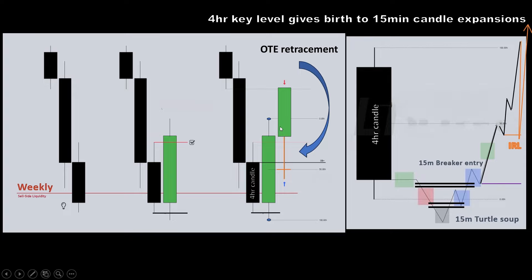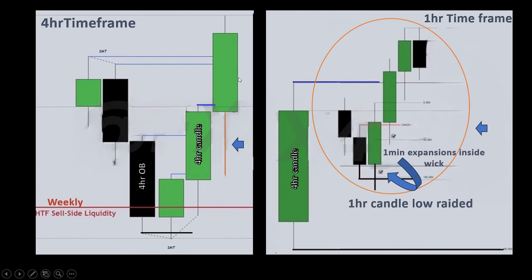After this new four-hour candle opened, it tapped into the four-hour order block and took some internal liquidity. We can anticipate 15-minute expansions on this four-hour bullish OB. You can see on the right image the new four-hour candle opened, took this internal liquidity, and expanded to external range liquidity again. The blue dot here is the external range liquidity. Then we see 15-minute expansions after taking this internal liquidity through to external range liquidity.